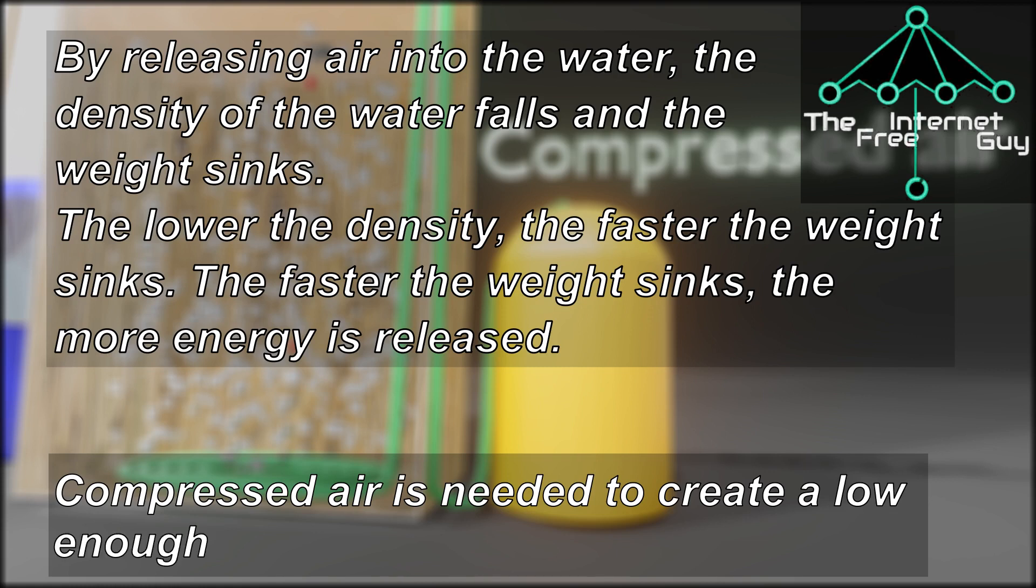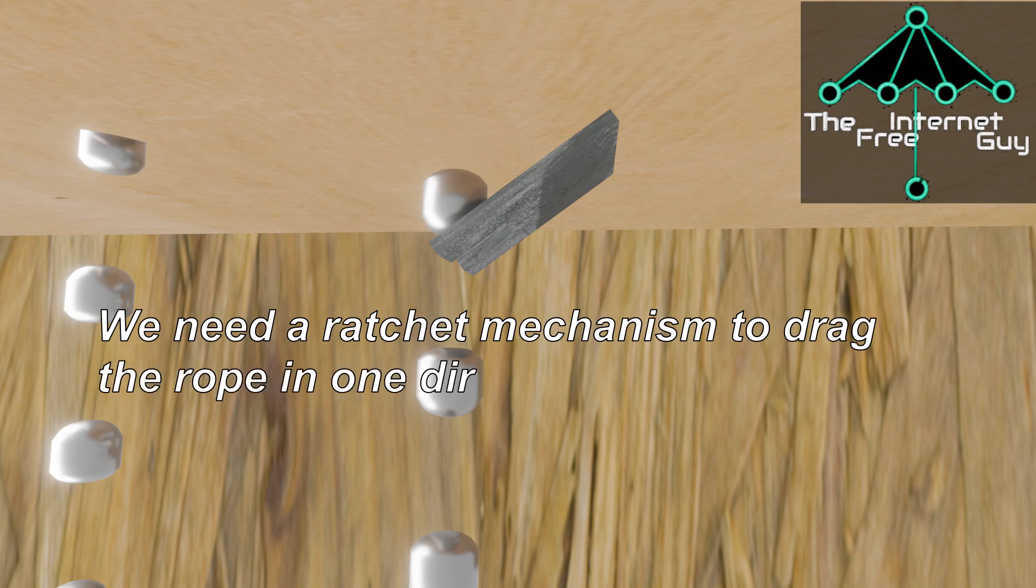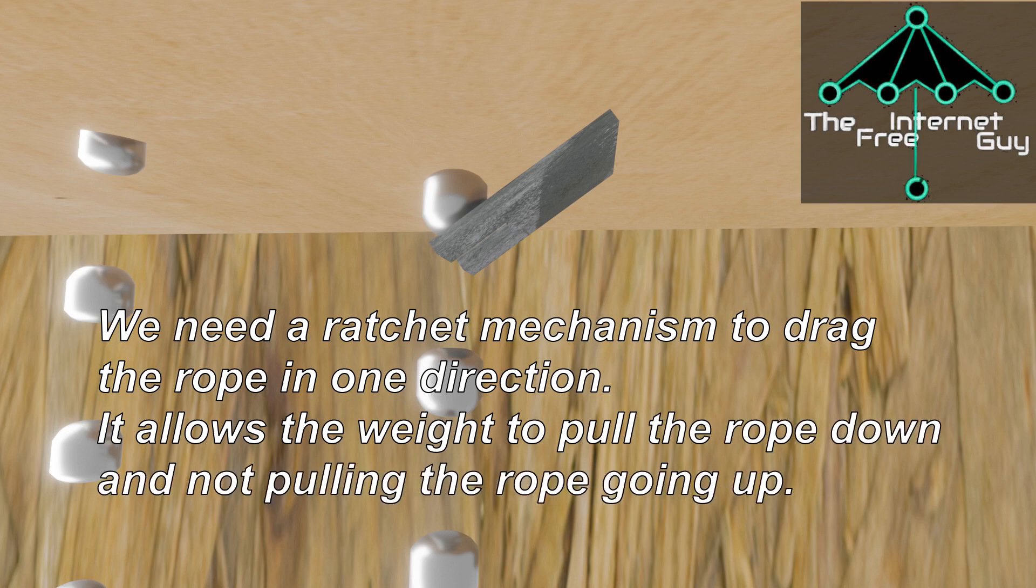Compressed air is needed to create a low enough density fast enough. We need a ratchet mechanism to drag the rope in one direction. It allows the weight to pull the rope down without pulling the rope going up.